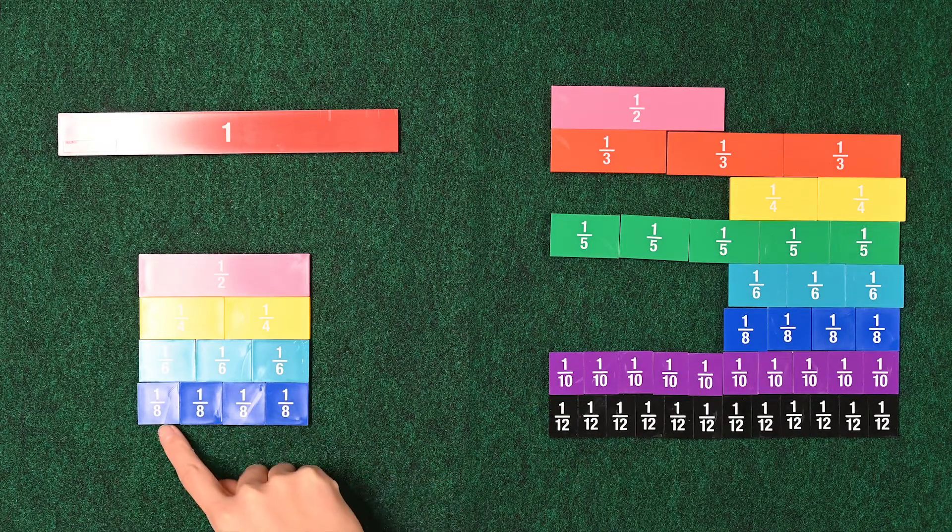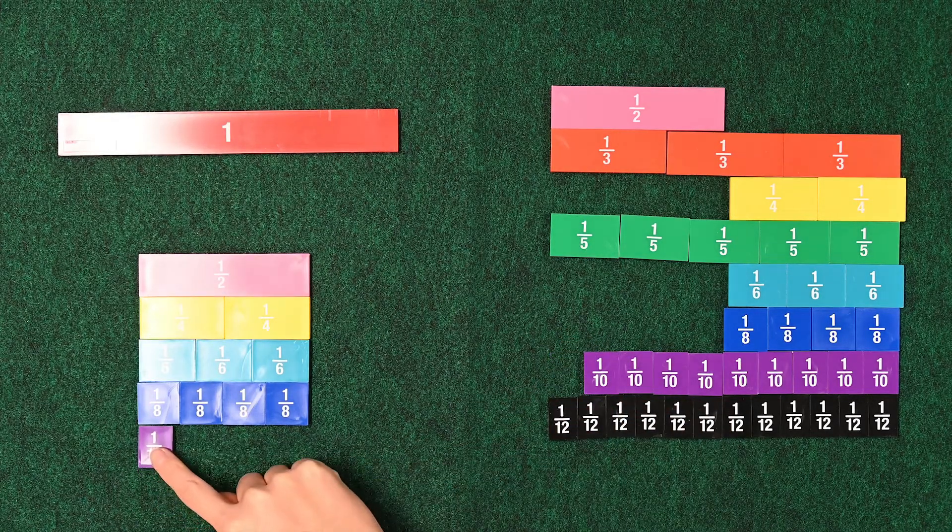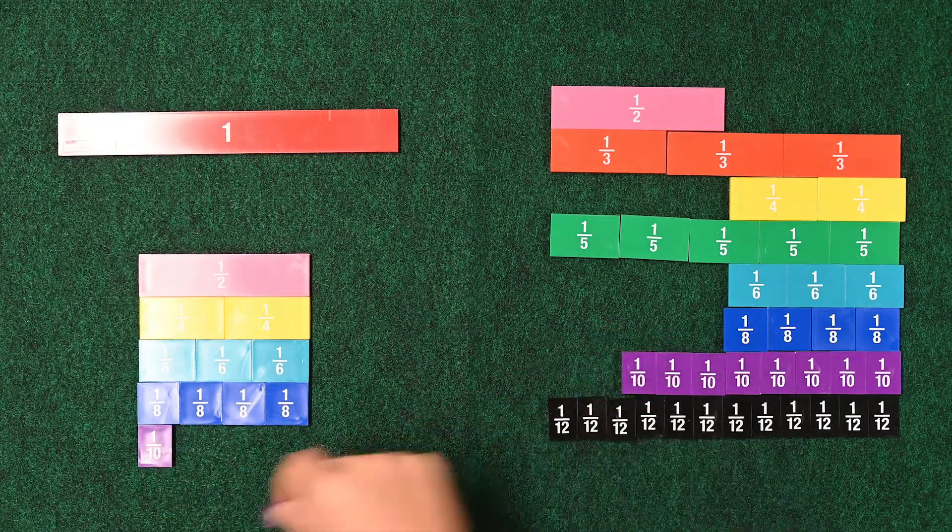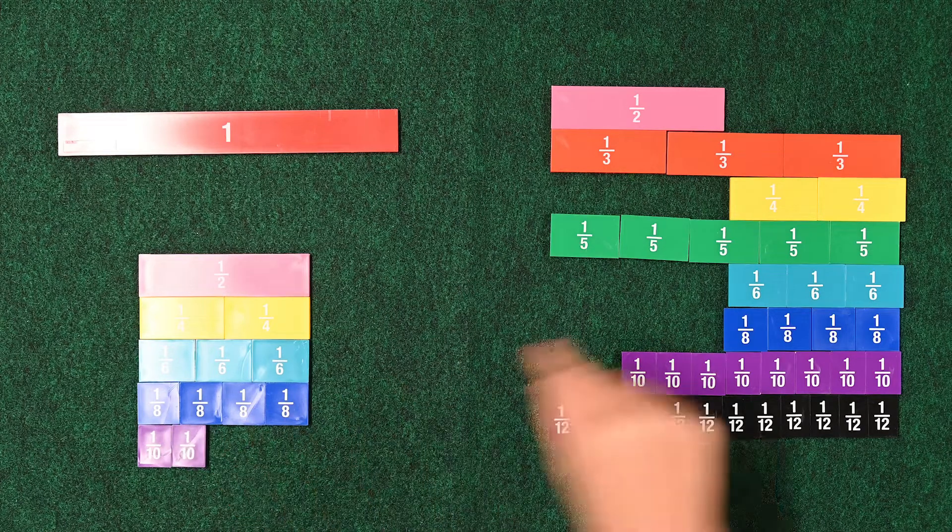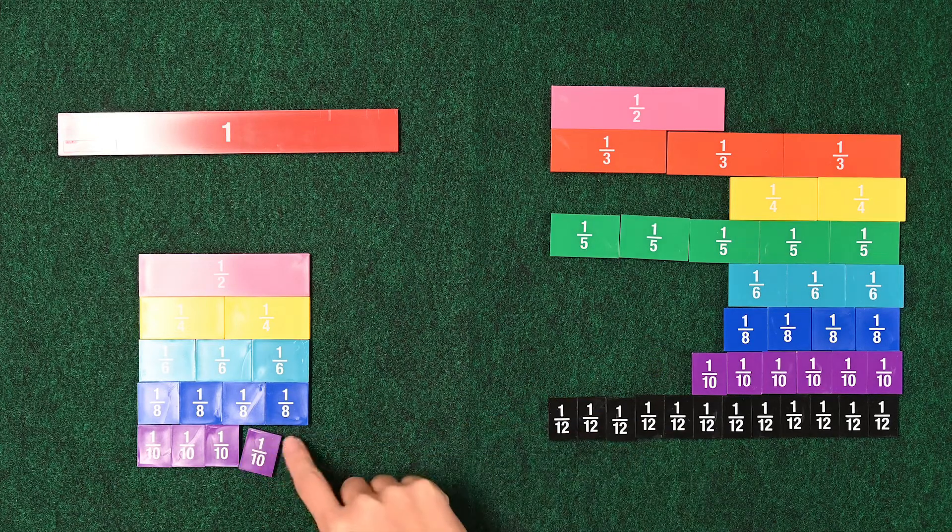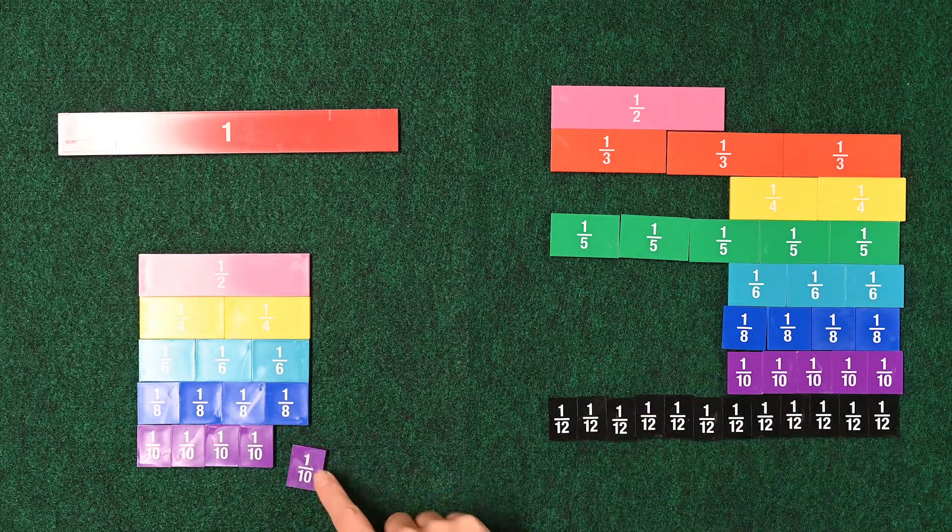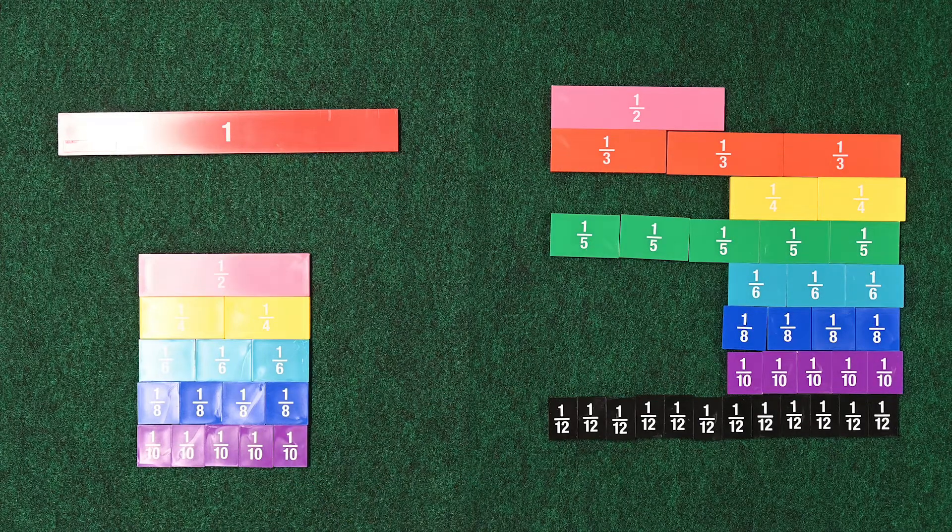Shall we try the 10ths? Let's try the 10ths. 1 10th. 2 10ths. 3 10ths. 4 10ths. And 5 10ths. 5 10ths makes 1 half.